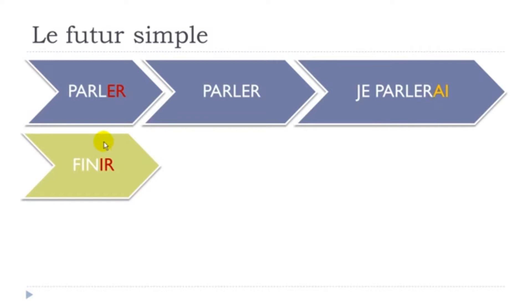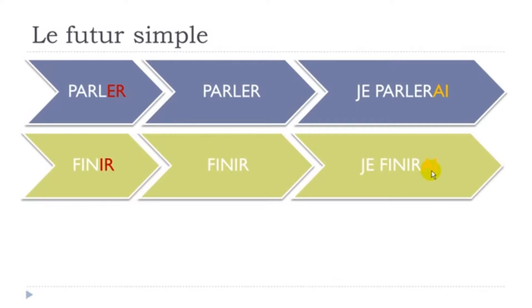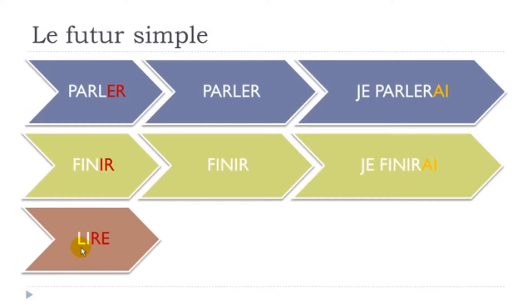The second group of verbs: 'finir', to finish, to end. The good news is that it behaves the same way as for the first group. You don't modify anything — you just keep your infinitive form and put the ending AI. So you get 'je parlerai', and then you get 'je finirai'. It's not that difficult for these two first groups.